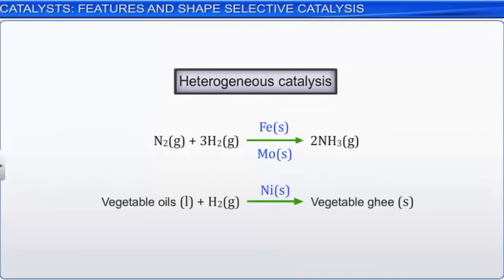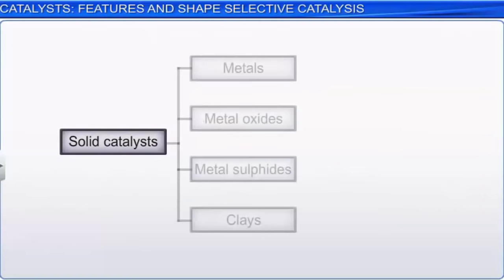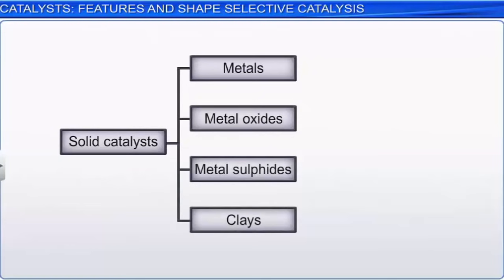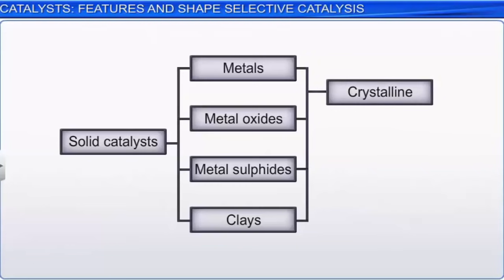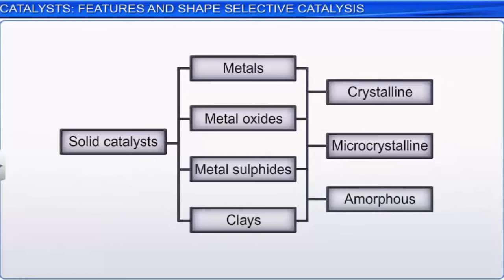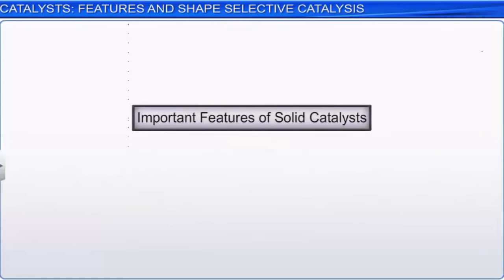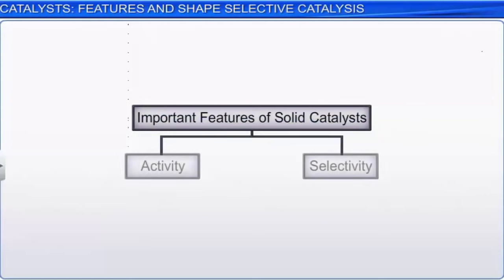Most heterogeneous catalysts are solids that act on substrates in a liquid or gaseous reaction mixture. These solid catalysts may be metals, metal oxides, metal sulfides, or clays, used in their pure form or as mixtures. Further, they may be crystalline, microcrystalline, or amorphous. Two important features that govern the choice of a solid catalyst for a particular reaction are activity and selectivity.